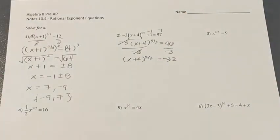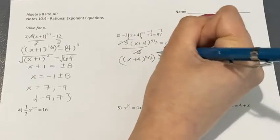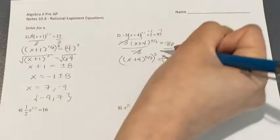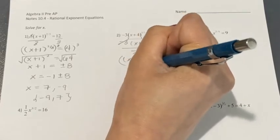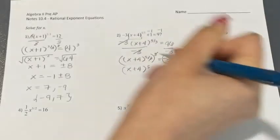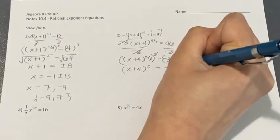After isolating the expression, raise both sides to the power of three. This cancels the one-third in the denominator, leaving x plus four to the power of five. You then recognize that negative 32 can be rewritten as negative two to the power of five.